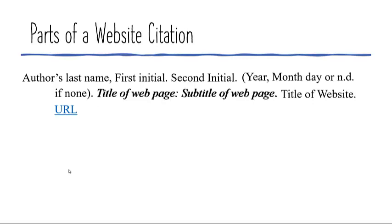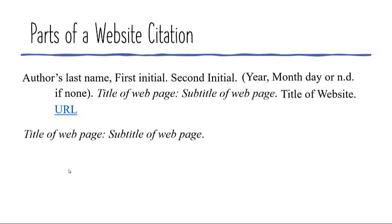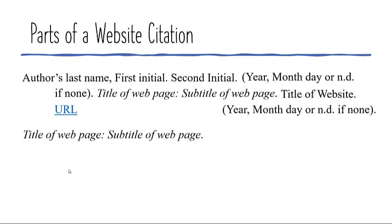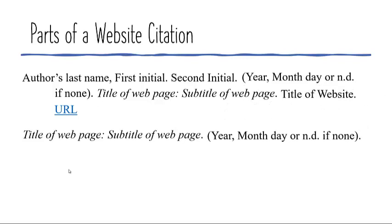For a citation with no author, you simply delete the author's name and start the citation with the title of the webpage. Then the date follows in the second position. Finally, you add the rest of the information and complete your citation. Note that the date is always the second element in an APA citation.